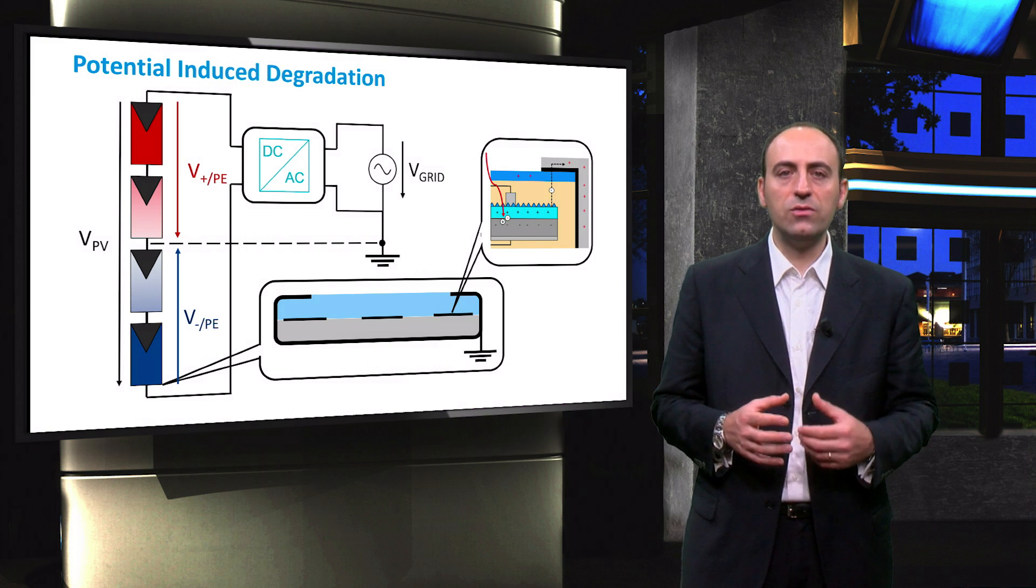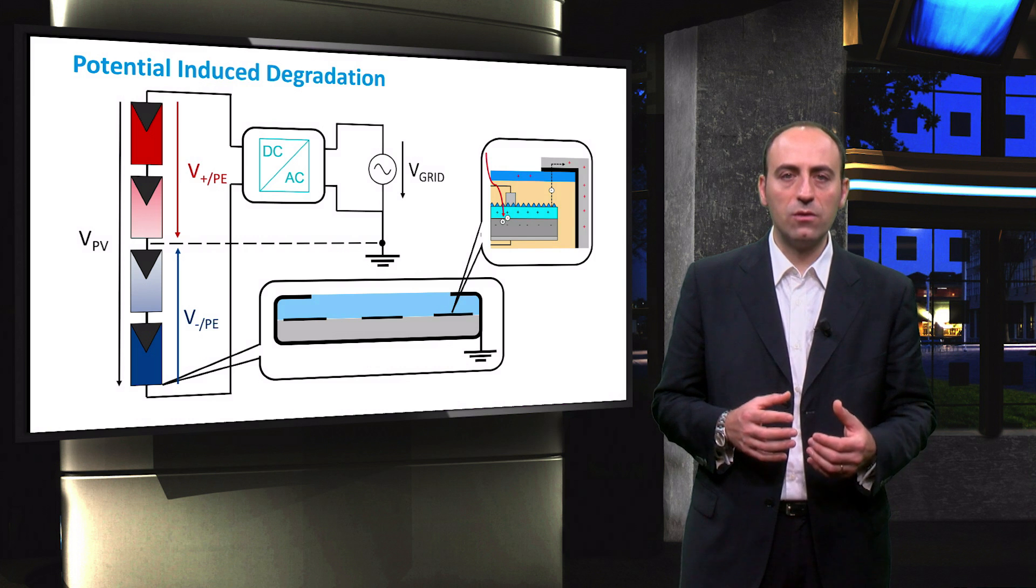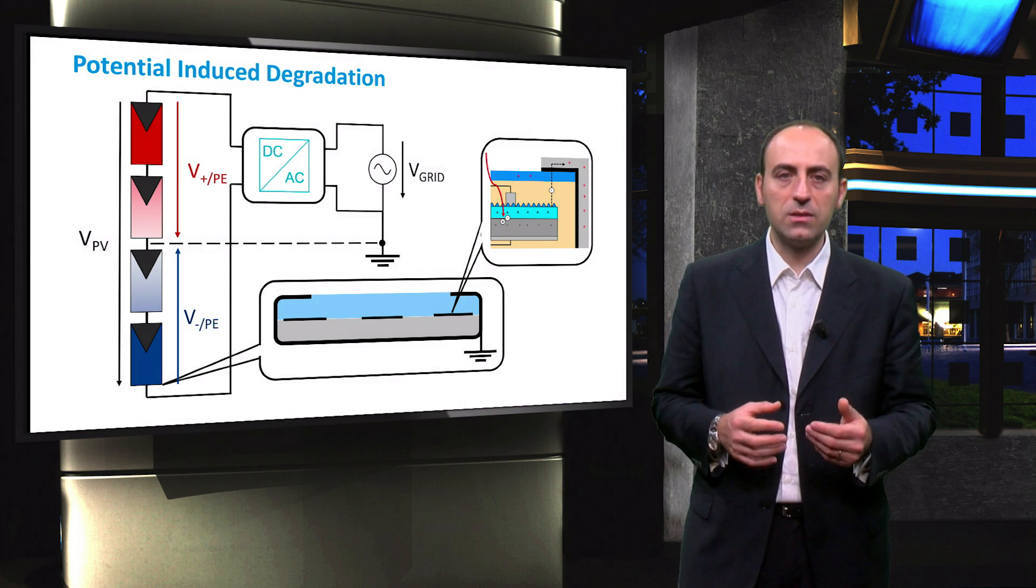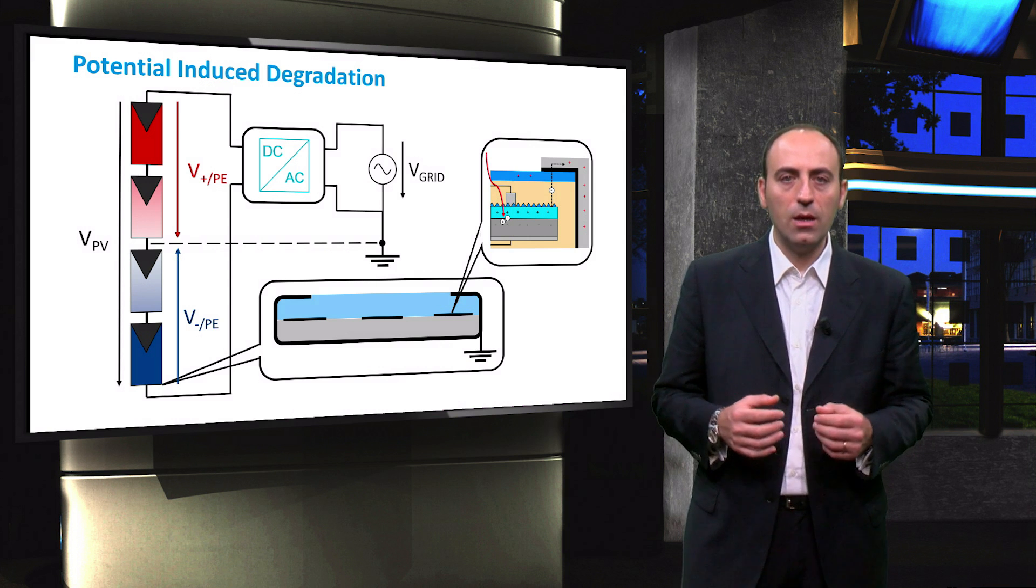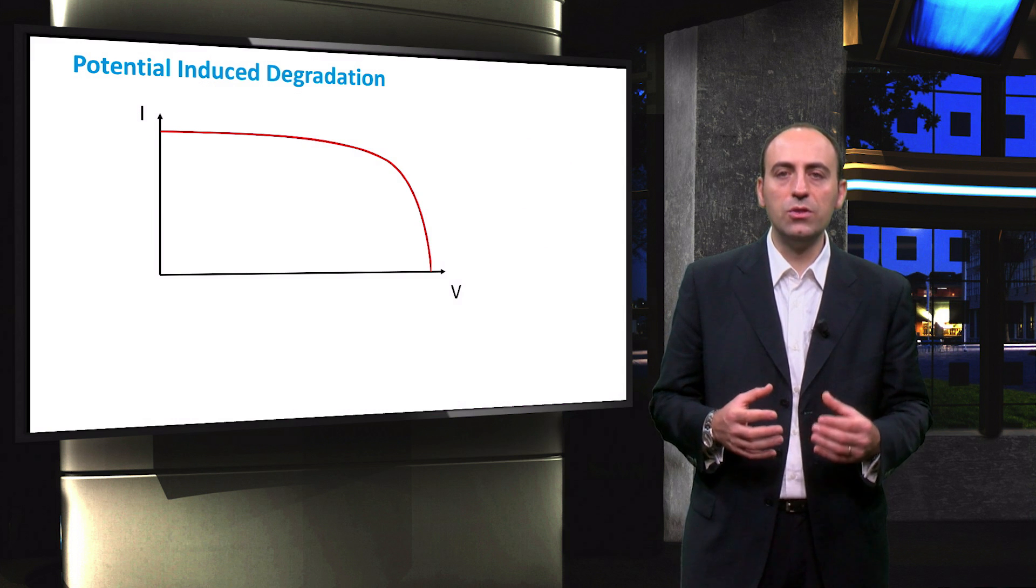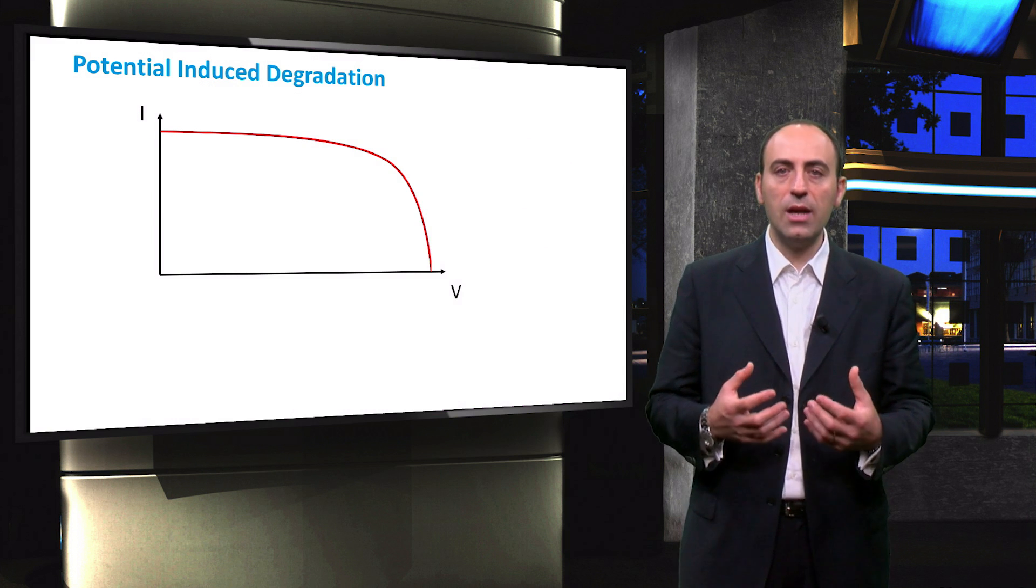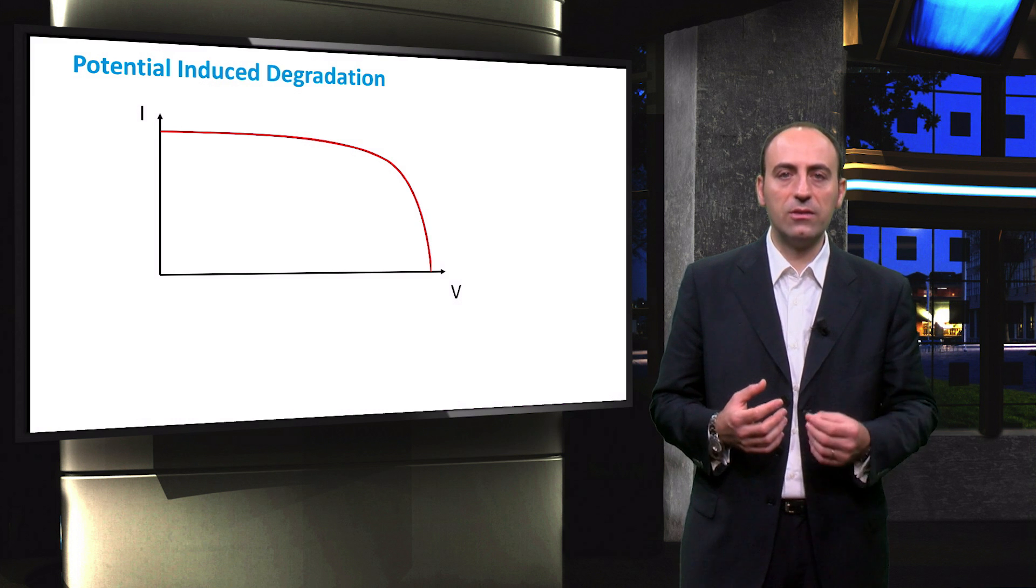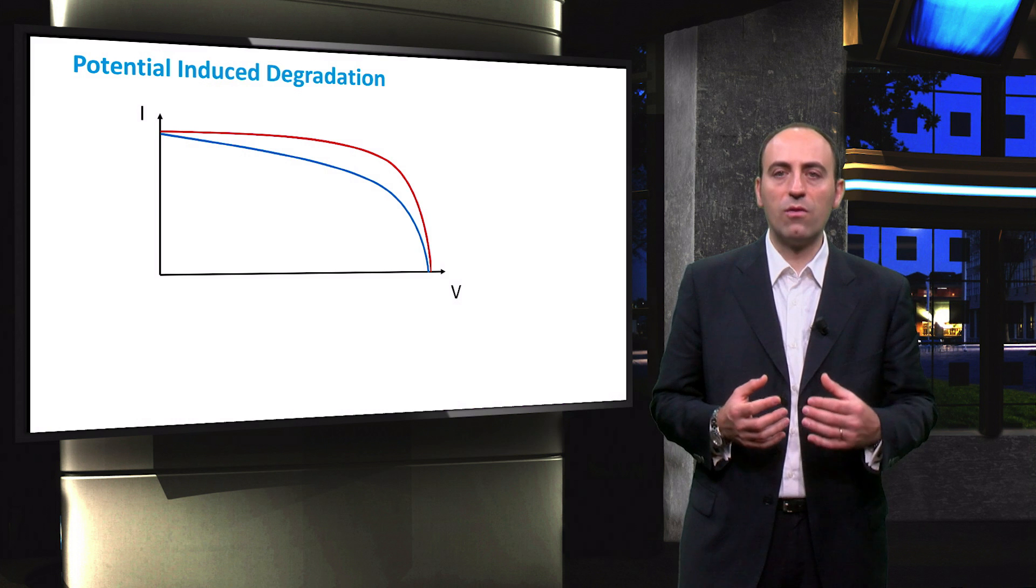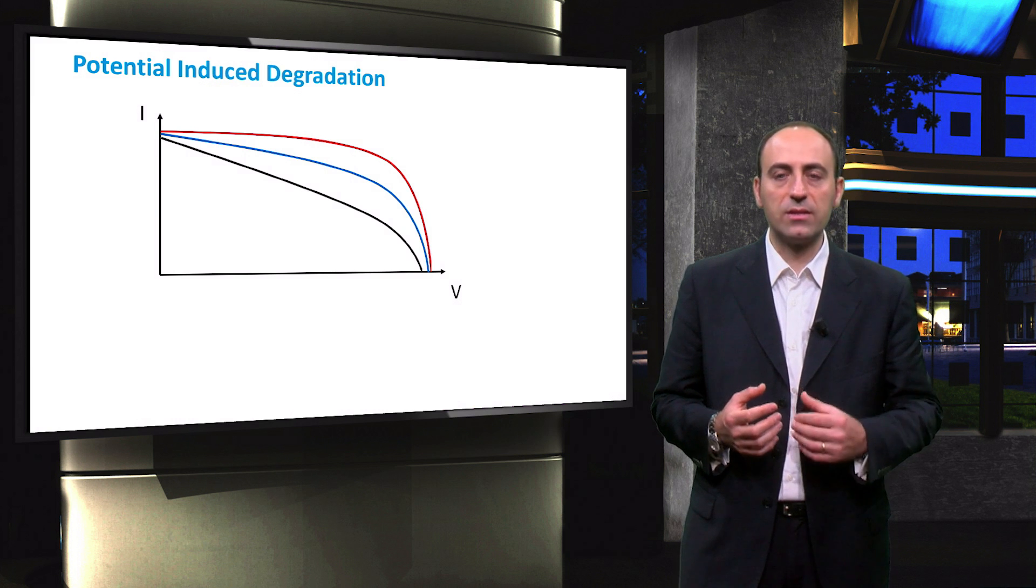The ions are driven from the semiconductor material towards other elements of the module, like glass, mount, and frame. This effect causes the module power output capacity to reduce because the polarization can adversely alter the characteristic curve of the PV cells. The curve tends to become more flat as the degradation effects increase.